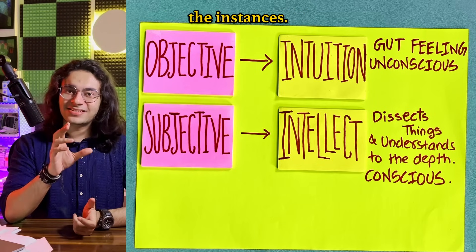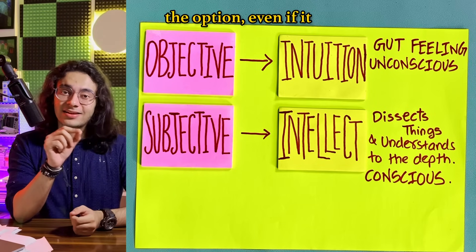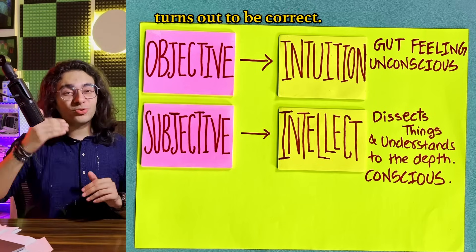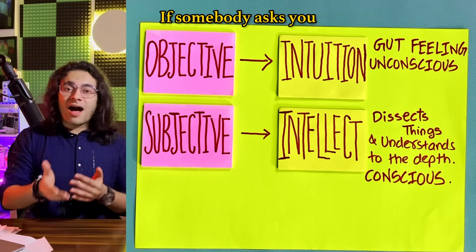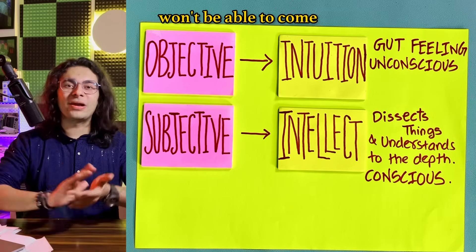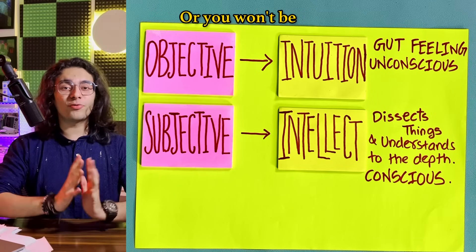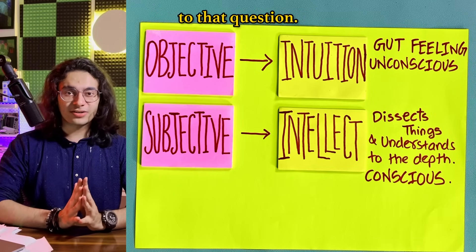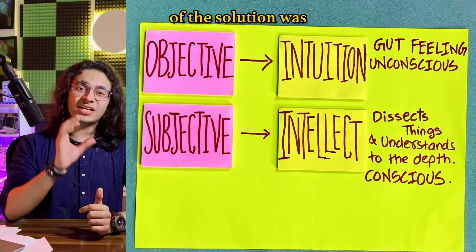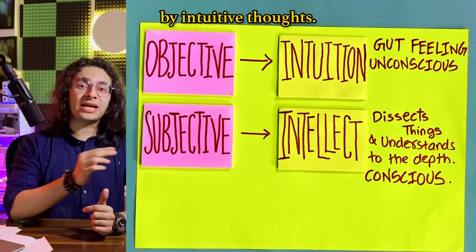Even if it turns out to be correct, if somebody asks you how you solved it, you won't be able to come up with a solution. Or you won't be able to write a subjective solution to that question. That's because most of the solution was processed in your brain by intuitive thoughts.